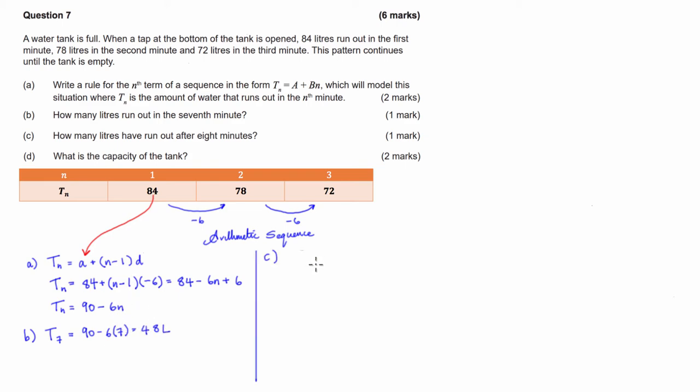So on to part C. Now part C is asking us how many total litres have run out after 8 minutes. The first thing we could do is just add up all of our terms, up to 8. So we've got t_1 plus t_2 plus t_3 plus dot dot dot t_8. Now that's a very laborious way of doing it. I personally wouldn't do it like that. We can use the sum of a particular amount of terms, which is usually denoted S_8.